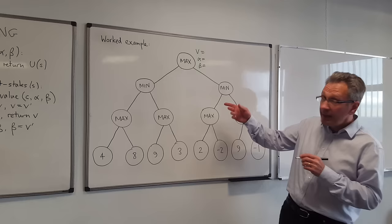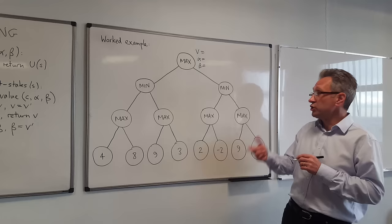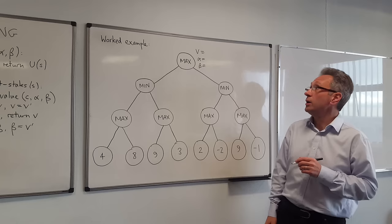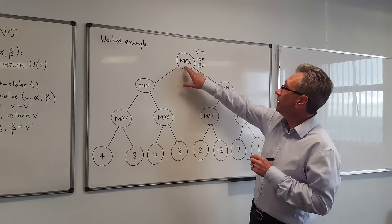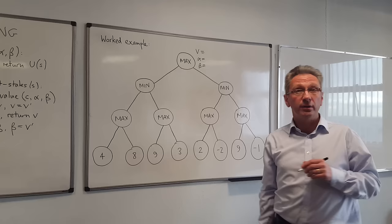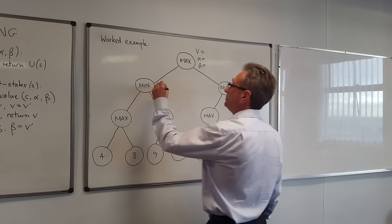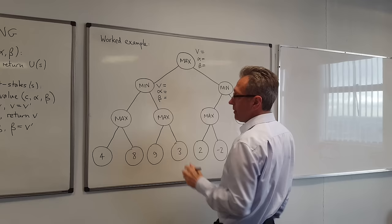I'm now going to repeat the example, but this time using alpha-beta pruning, and that will show you where the search can be pruned — where we can make efficiencies in the search. We start at the top level and call MaxValue on this node here. We don't know the value of alpha or beta to start with. We then call MinValue, and again we don't know the values here to start with, and we call MaxValue on this node here.